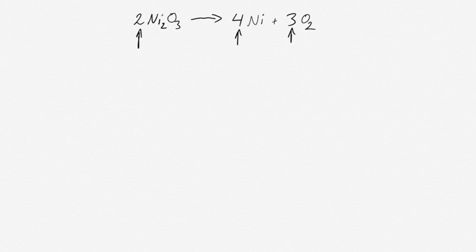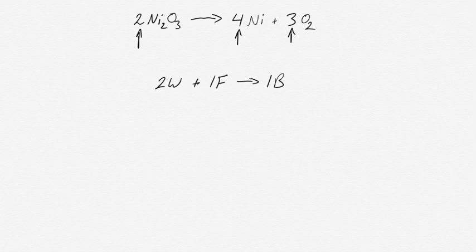Sometimes when you see it in terms of chemical equations, it can be a little confusing. So typically we start with a simpler example - we can think about bicycles. Bicycles are made from two wheels and one frame, and that gives you one bicycle.